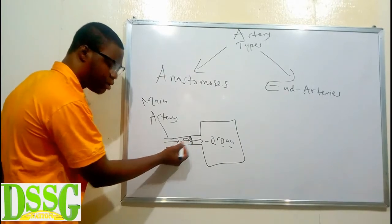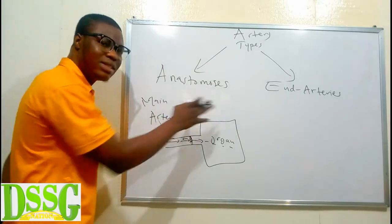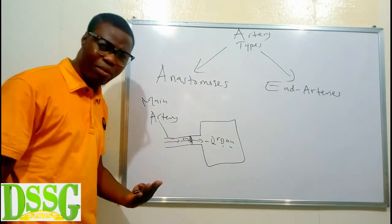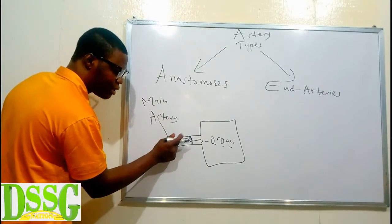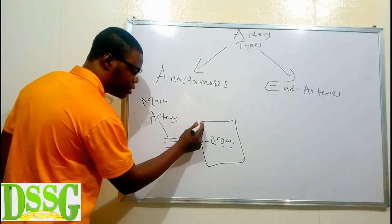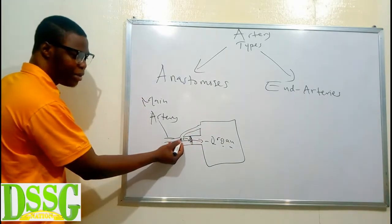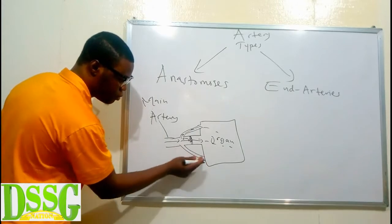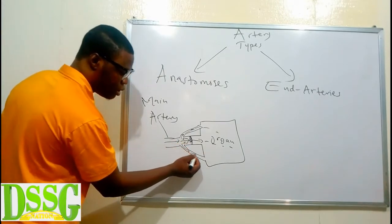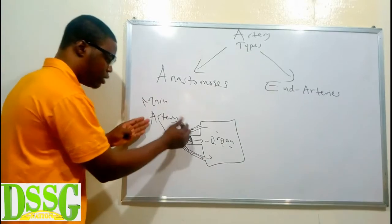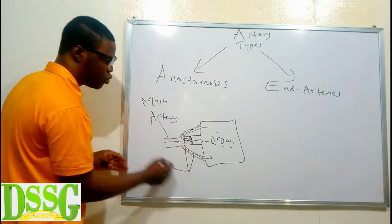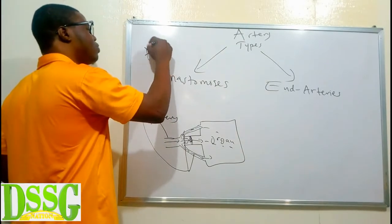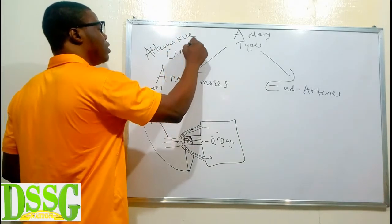Anastomoses are a kind of arteries that provide alternative circulation to an organ. Whenever the main artery is blocked, there are some tiny arteries radiating from the main artery into that organ, so the blood takes an alternative route through these arteries back to that organ. So whenever the main artery is occluded, anastomotic arteries provide an alternative — also called collateral — circulation.